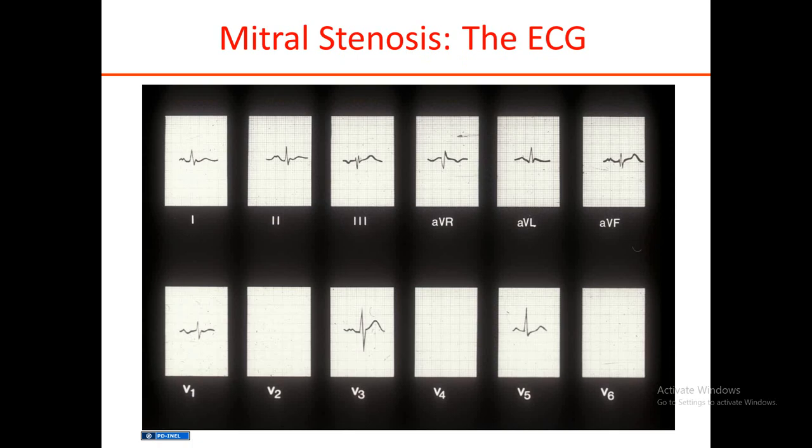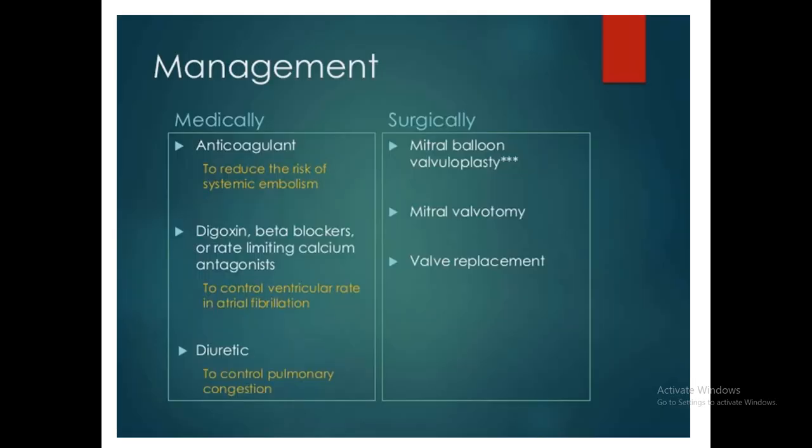On ECG, the P wave represents atrial activity. Here it is broad and split. If the P wave is broad and greater than 0.12 seconds, this means left atrial hypertrophy. This is also known as P-mitrale, which is seen in lead II, lead III, and AVF with splitting.